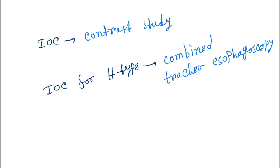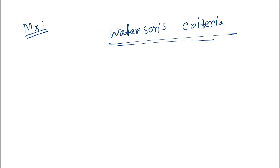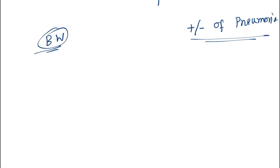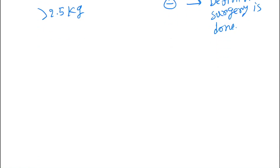Now coming to management. Management is based on the Waterston criteria. In this criteria we look at the birth weight and the presence or absence of pneumonia. If the birth weight of the baby is greater than 2.5 kg and there is presence of pneumonia, then we will do definitive surgery.